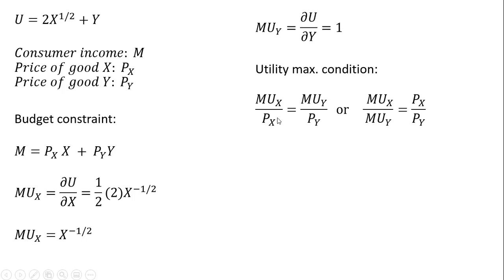Setting up our utility maximizing condition, I'm going to take the marginal utility of good X and divide it by P subscript X, and doing a similar thing for good Y: one divided by the price of good Y.